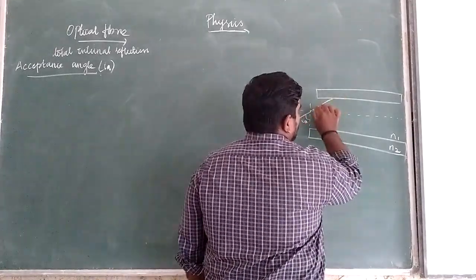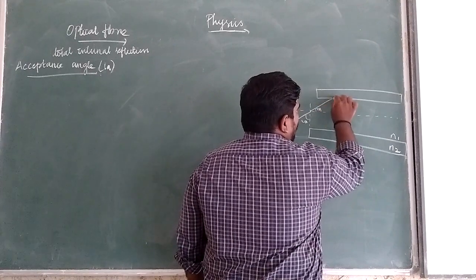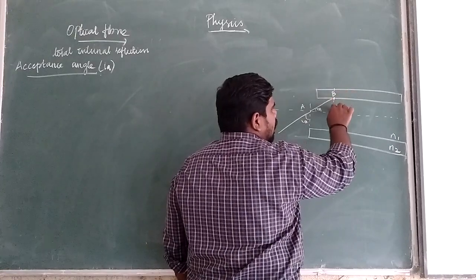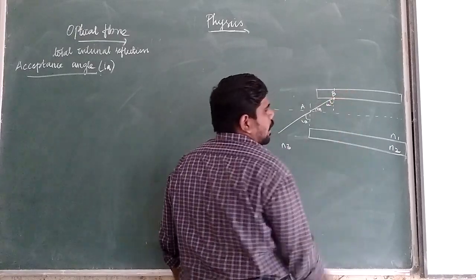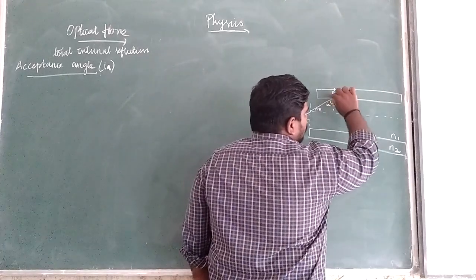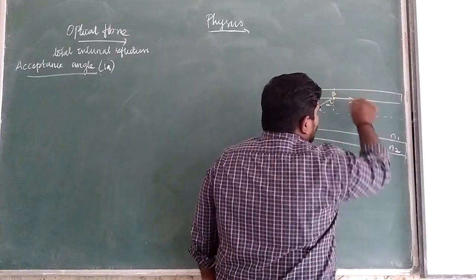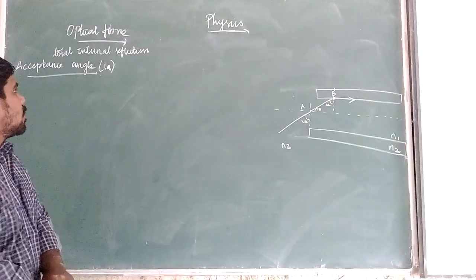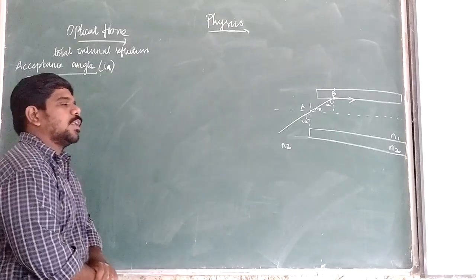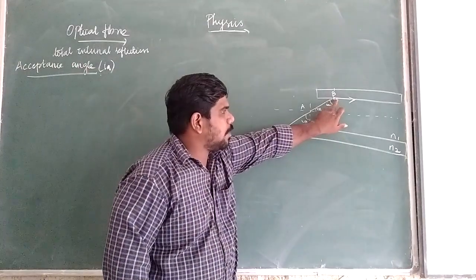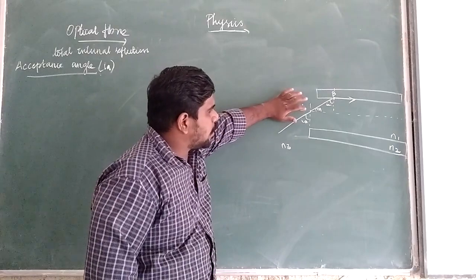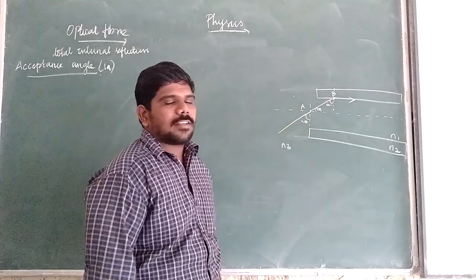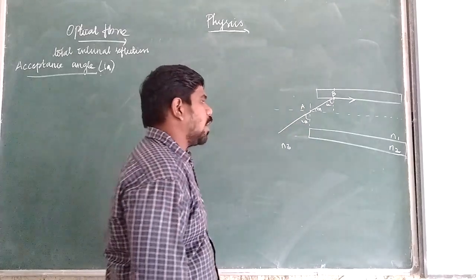At point A there is refraction, and at the core-cladding surface the light is incident at the critical angle, so the refracted ray grazes towards the boundary. The acceptance angle is the particular angle at which the light must be incident at the core end to ensure the critical angle at the core-cladding interface.